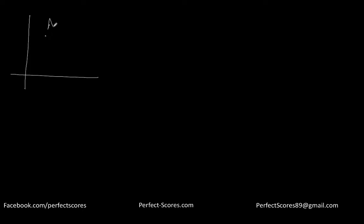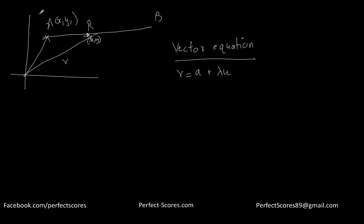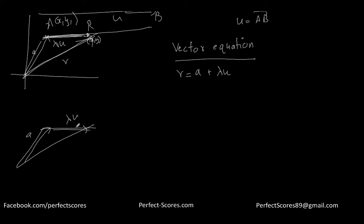Let's suppose there's a point A which is (x1, y1), there's another point B, so this is the vector AB. I want to define the line AB. Let's suppose any point R is there with coordinates (x, y). The vector equation of this point came out to be — and I've derived this in the previous video — that vector R is equal to vector A plus lambda times vector U. So if vector U is equal to vector AB, then this is just lambda times vector U, a smaller vector U. And vector R equals A plus lambda U, which makes sense because A plus lambda U gives us R.